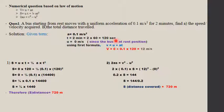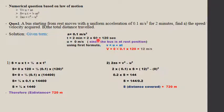Using formula 1: v = u + at. v = 0 + 0.1 × 120. 0.1 into 120: the zero cancels, and 1 into 12 = 12. So the velocity acquired is 12 m/s.